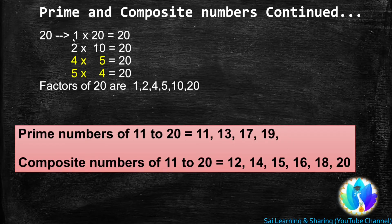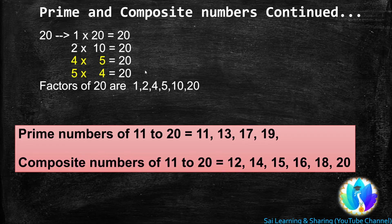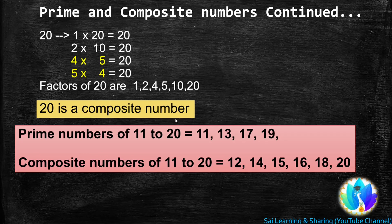Next, 20. 1 is a factor of every number, so 1 × 20 = 20. 20 is a multiple of 2: 2 × 10 = 20. 20 is not a multiple of 3, but 20 is a multiple of 4: 4 × 5 = 20. 20 is a multiple of 5: 5 × 4 = 20. We stop here because both 4 and 5 have occurred earlier. So the factors of 20 are 1, 2, 4, 5, 10, and 20. Since 20 has more than two factors, 20 is a composite number.